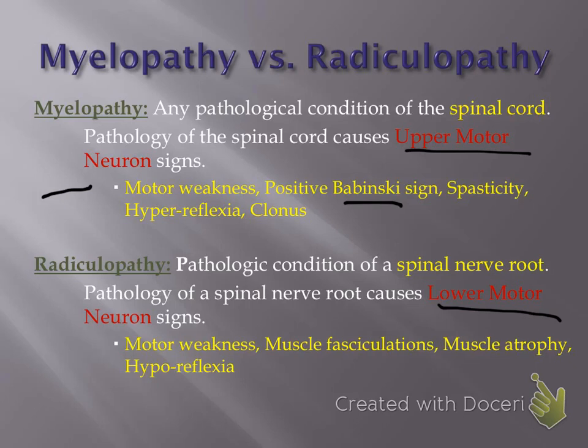With clonus, the way you elicit abnormal ankle clonus is to quickly dorsiflex the patient's ankle, and you will get a little bounce back as a type of reflex. One or two pulses back at you is normal, but if you hold that ankle in dorsiflexion and that foot continues to bounce — sustained bouncing of the foot against your hand — that is an abnormal ankle clonus, also suggestive of upper motor neuron signs, all consistent with myelopathy.